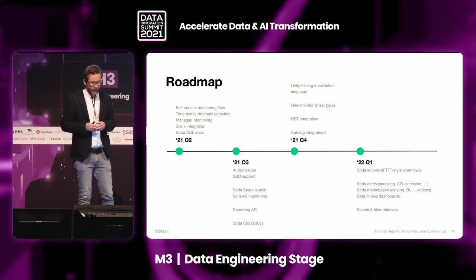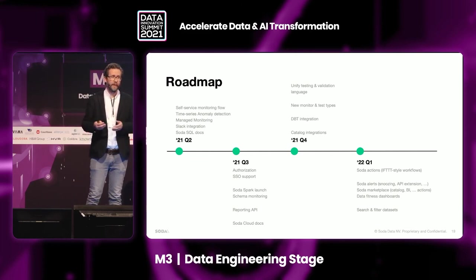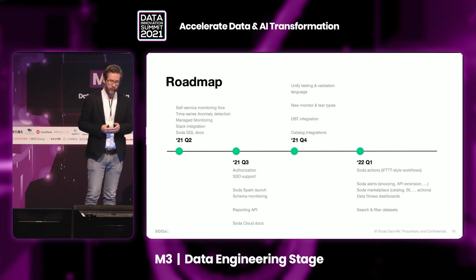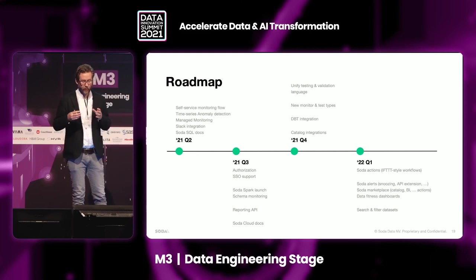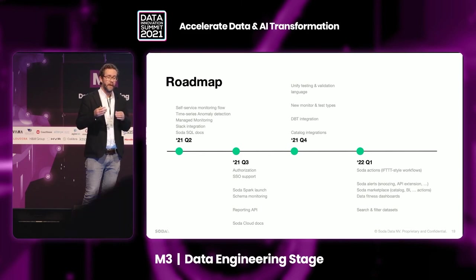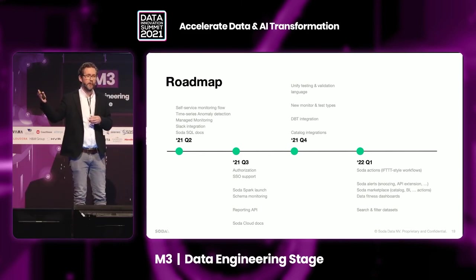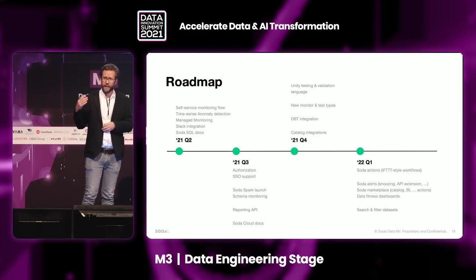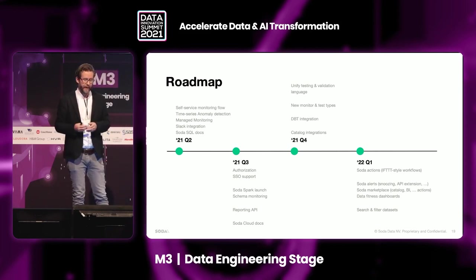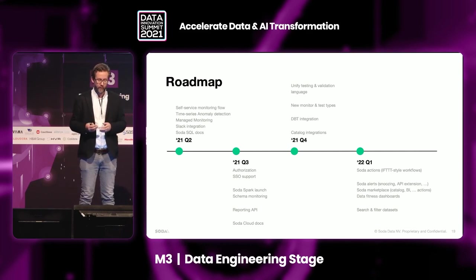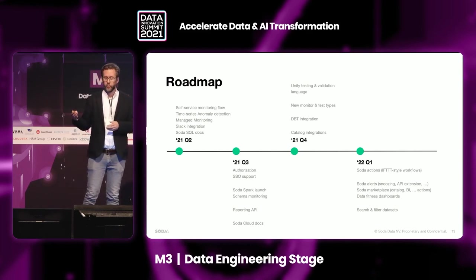And then DBT — DBT has some data testing capabilities, and there's some overlap with what we provide through our open source tooling. Our strategy is to enable companies and organizations using DBT today to send that data directly to Soda Cloud, so you get a single pane of glass for data quality regardless of whether it's executed by DBT or by us. We'll also extend catalog integrations, working with Amundsen and DataHub primarily in Q4. And then Q1 next year will have a lot of focus on Soda actions — the data quality issue resolution part of things.